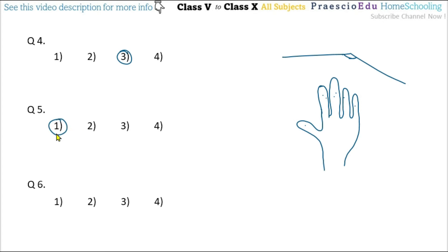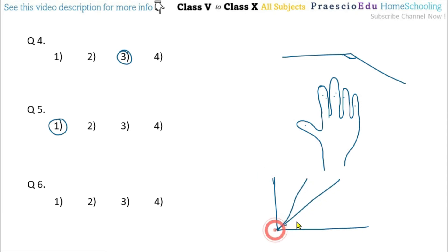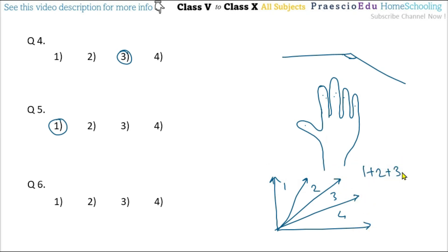Question number 6: how many angles are there in the given figure? The figure has angles 1, 2, 3, and 4. We add them: 1 plus 2 is 3, plus 3 is 6, plus 4 is 10. So there are 10 angles total, and option number 4 is the correct one.